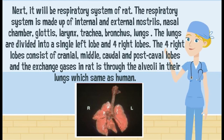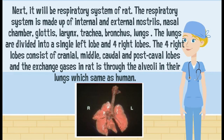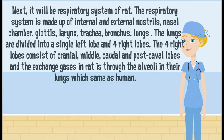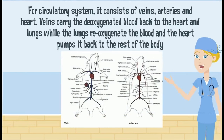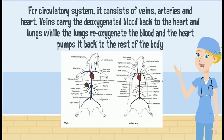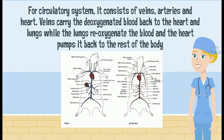The respiratory system of the rat consists of internal and external nostrils, nasal chamber, glottis, larynx, trachea, bronchi, and lungs. The lungs of the rat are divided into a single left lobe and four right lobes. The four right lobes consist of cranial, middle, caudal, and postcaval lobes. Gas exchange in rats occurs through the alveoli in the lungs, the same as in humans. For the circulatory system, it consists of veins, arteries, and the heart. Veins carry deoxygenated blood back to the heart and lungs, while the lungs re-oxygenate the blood and the heart pumps it back to the rest of the body.